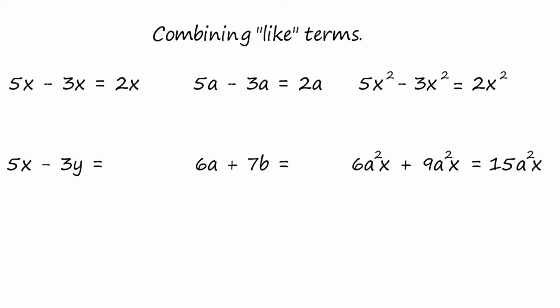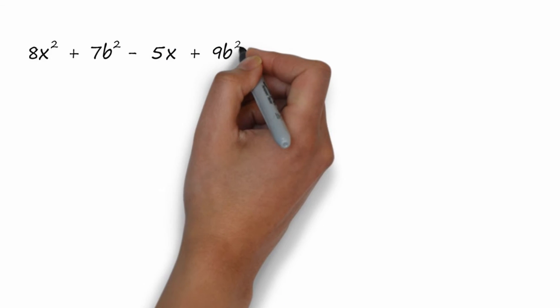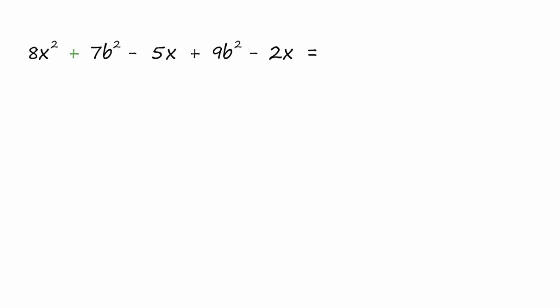So let's look at a math problem and see if we can combine the like terms. We're going to have different letters, different squareds. What do you see here that looks the same that we can combine or subtract?